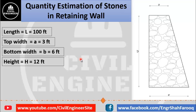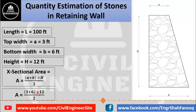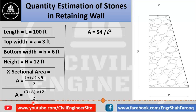To estimate the quantity of stone masonry required, first we find the cross-sectional area of the retaining wall. The cross-sectional area of a trapezoidal section is equal to (a + b) × h ÷ 2, where a is top width, b is bottom width, and h is height. Putting in values: A = (3 + 6) × 12 ÷ 2. After simple calculation, the cross-sectional area is 54 square feet.